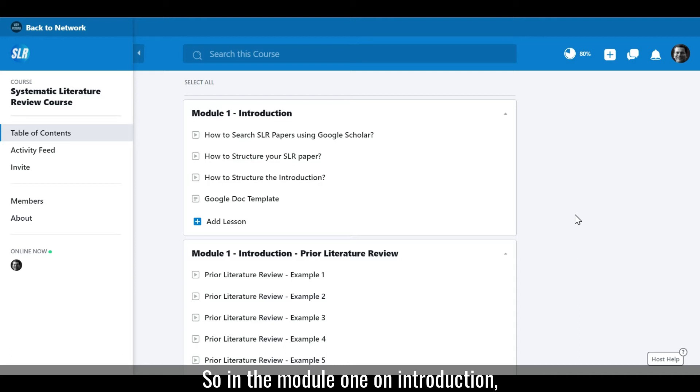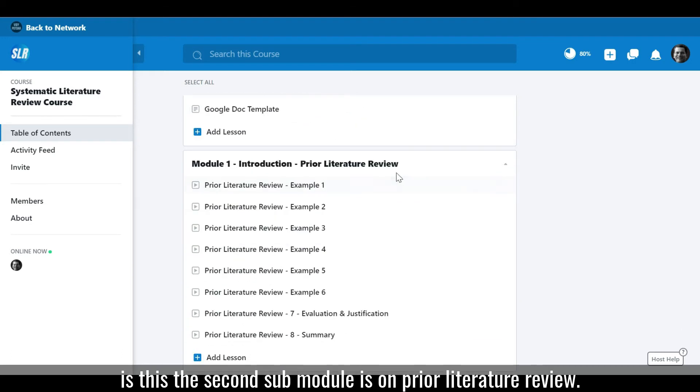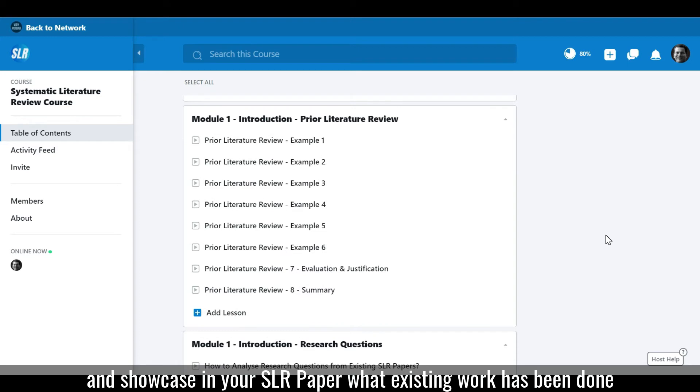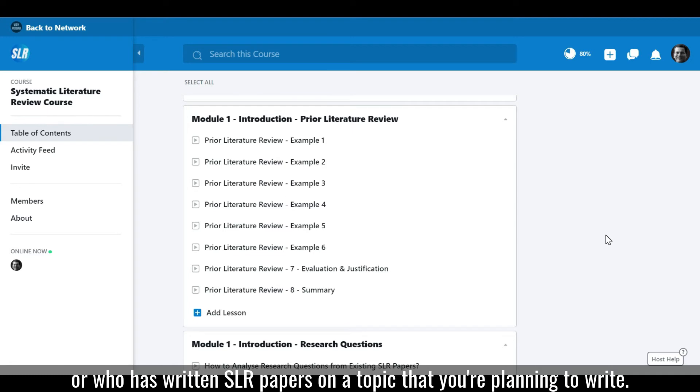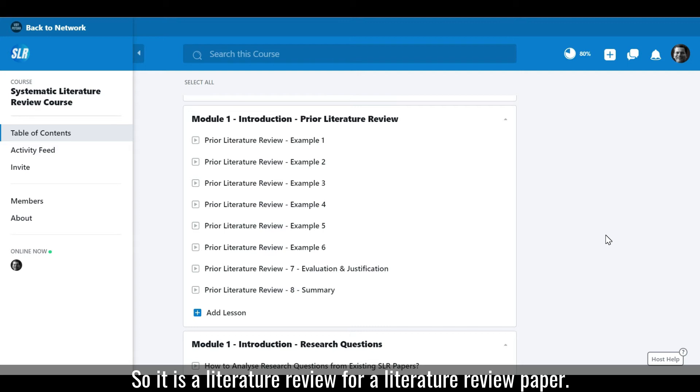So in the module one on introduction, there are several sub-modules. The first sub-module is this. The second sub-module is on prior Literature Review. This is important because you need to understand and showcase in your SLR paper what existing work has been done or who has written SLR papers on a topic that you are planning to write. So it is a literature review for a literature review paper.